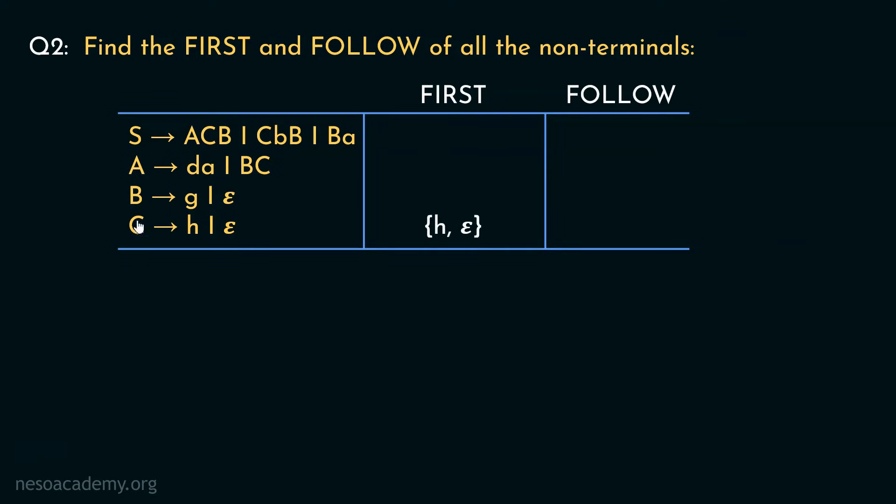Coming to First of B, we will have the symbols lowercase g and epsilon.